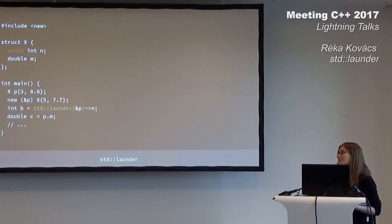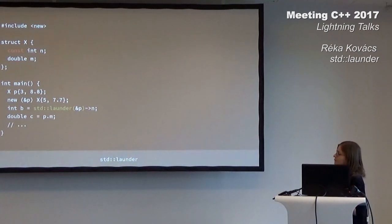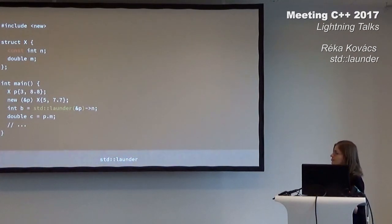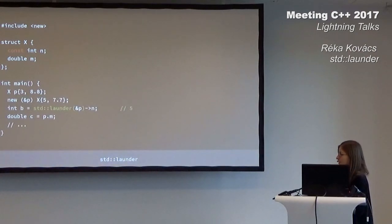So that's when std::launder comes into the picture. And as you can see, it kind of 'launders' your pointer so that you can use it to access your new object. And now our b-value is valid again.